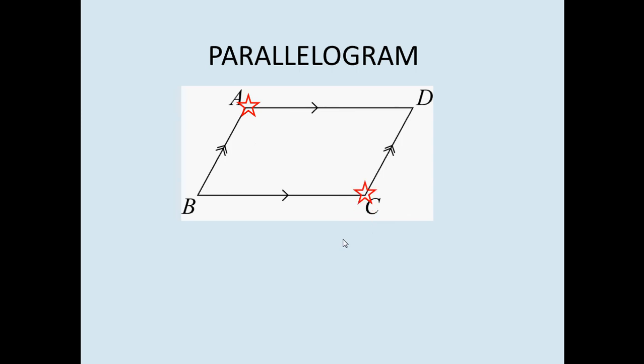Now, about the angles — look at the red stars. Angle BAD is equal to angle BCD. They are equal because opposite angles of a parallelogram are equal. For the other angles, look at the yellow stars: angle ABC equals angle ADC, because they are also opposite angles of the parallelogram.